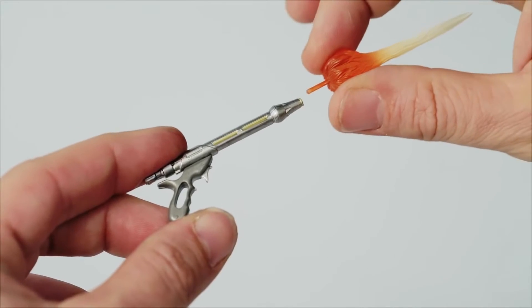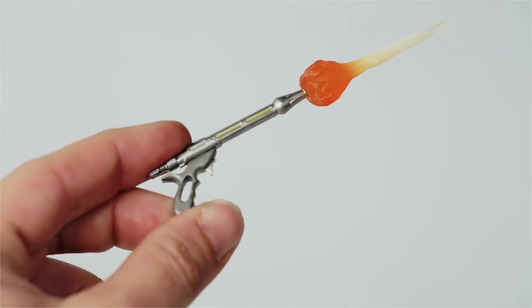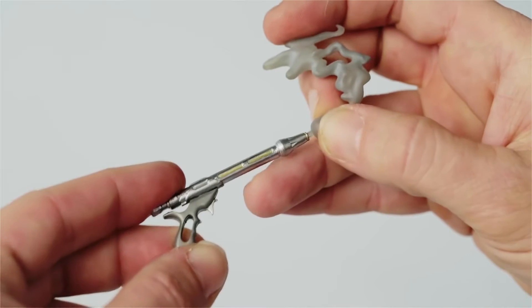You may customize the blaster pistols by sliding the keys on the blast flare and smoke attachments down the barrel of each blaster.